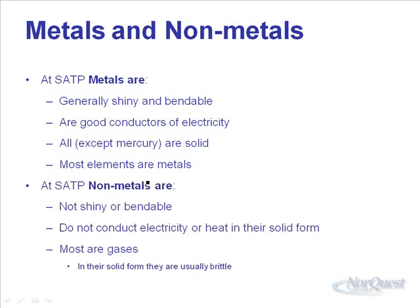At SATP, non-metals are harder to describe. They're not shiny or bendable, and don't conduct electricity or heat in their solid form. Most are gases, but their state is variable — some are liquids, some are solids, some are gases. Unlike metals, which are all solids except mercury, non-metals in their solid form are usually brittle.